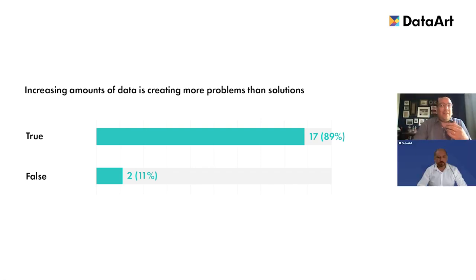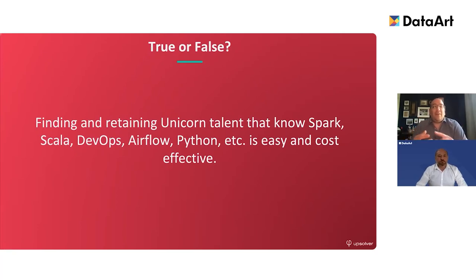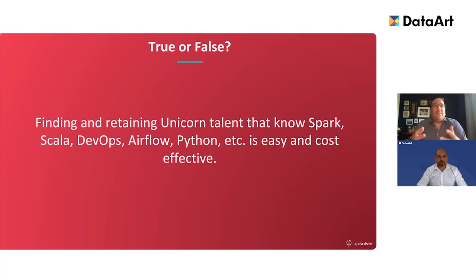The next poll question is about finding and retaining unicorn talent. We call them unicorn talent because they're going to have to know Spark, Scala, DevOps, Airflow, Python — you name it. Are they easy to find and cost effective? Is this true or false?